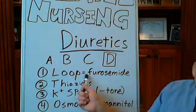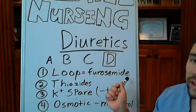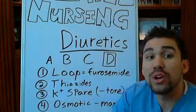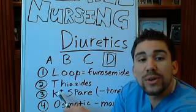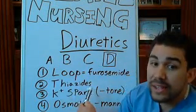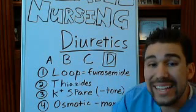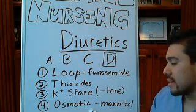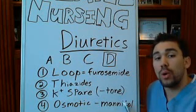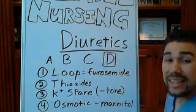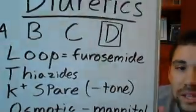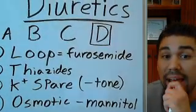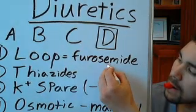You have loop diuretics — furosemide, also known as Lasix. You have your thiazide diuretics, like hydrochlorothiazide. You have your potassium-sparing diuretics, also called spironolactone or aldactone. And you also have osmotic diuretics, like mannitol. If you ever give something in the hospital setting, just try to relate these suffixes — loop drugs ending in '-mide', like furosemide.